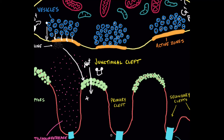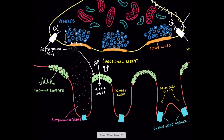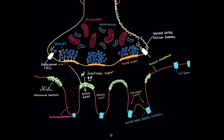The sodium rushing in changes the charge of the muscle membrane — the inside of the cell suddenly becomes much more positive. That's where the voltage-gated sodium channels we mentioned earlier come in. These voltage-gated sodium channels at the bottom of the secondary clefts respond to this change in membrane charge. When triggered by the voltage change, they open as well and sodium rushes through them. This is important because depolarization of the rest of the muscle cell outside the neuromuscular junction is dependent on these voltage-gated sodium channels.